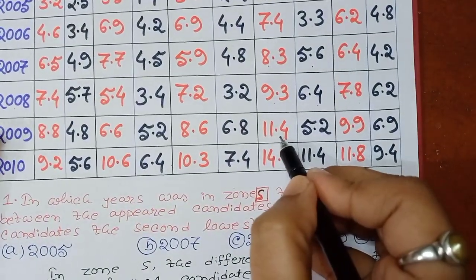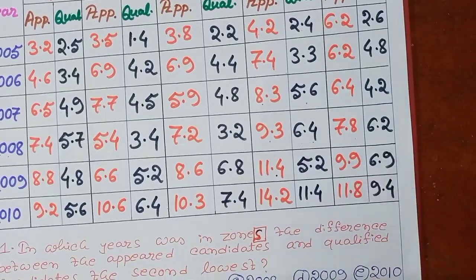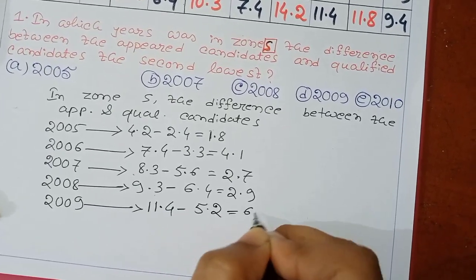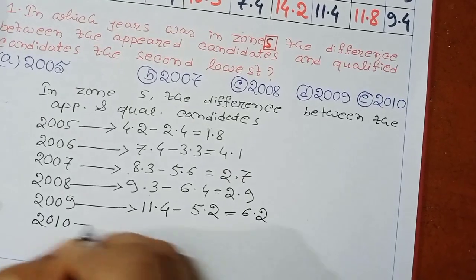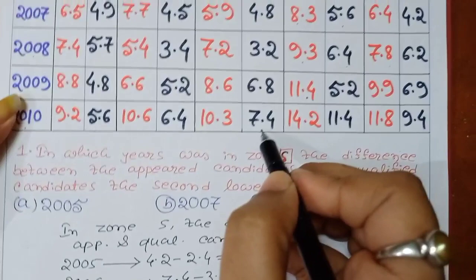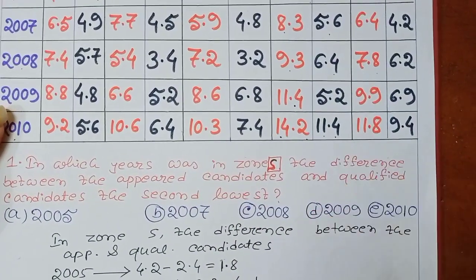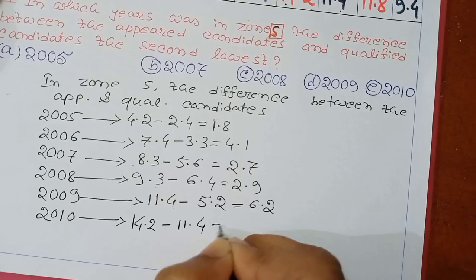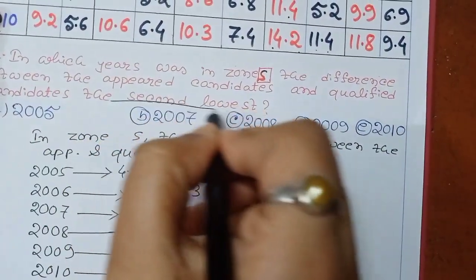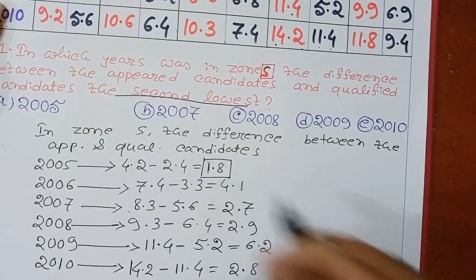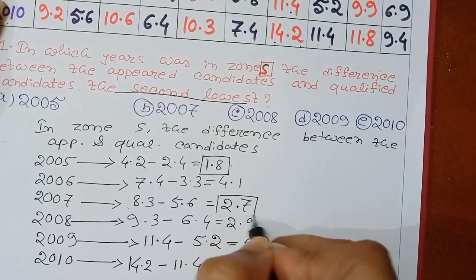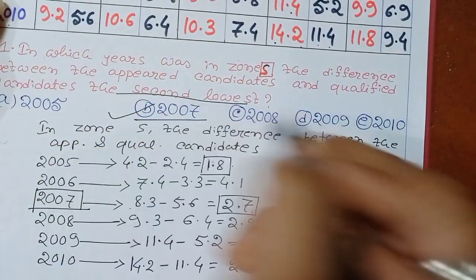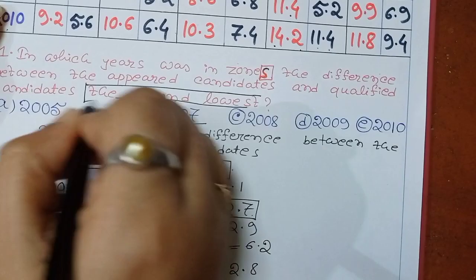In 2009, zone S: appeared 11.4 and qualified 5.2, so 11.4 minus 5.2 equals 6.2. In 2010, zone S: appeared 14.2 and qualified 11.4, so 14.2 minus 11.4 equals 2.8. Looking at all differences, the second lowest is 2.7, which corresponds to the year 2007. So the answer is 2007.